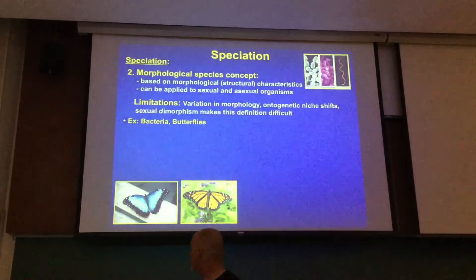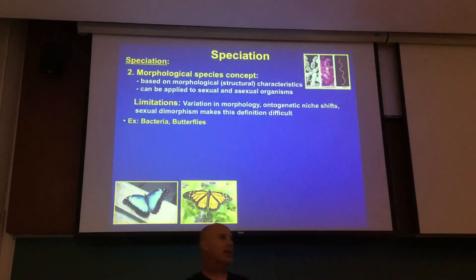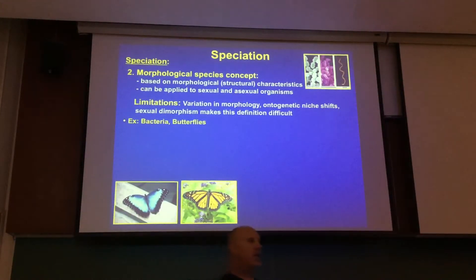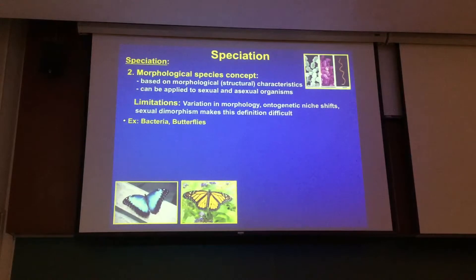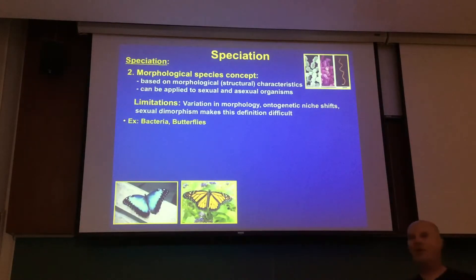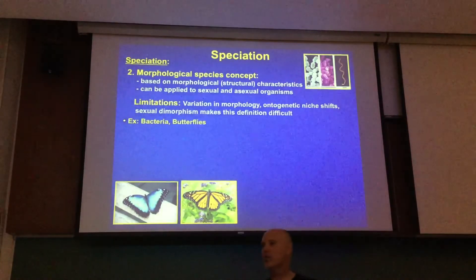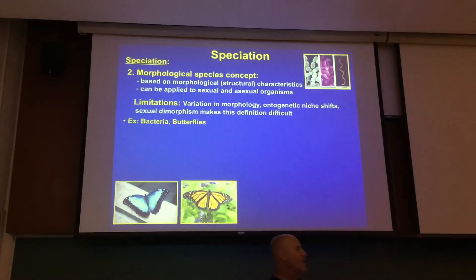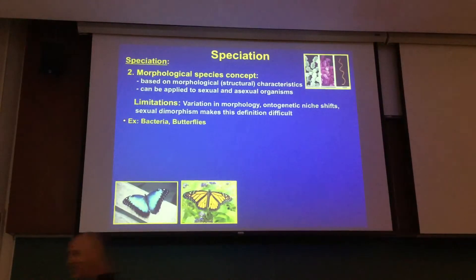Anybody recognize that butterfly in the bottom left? That's called the blue morpho. It's an endangered butterfly in many areas because it's prized by collectors. They used to go out and collect it to sell to butterfly collectors. It seemed like an okay thing, but they found an easy way: go into a local village, offer kids a nickel for every butterfly they catch, and they bring them in by the hundreds — stripping the entire forest of the blue morpho.